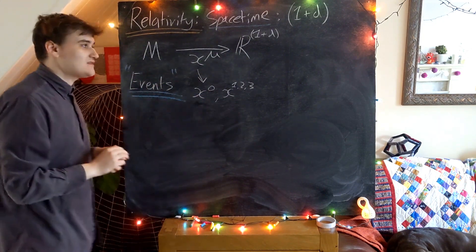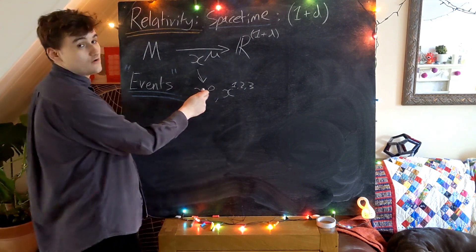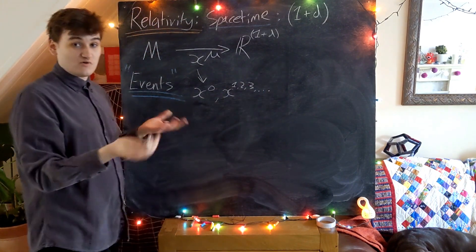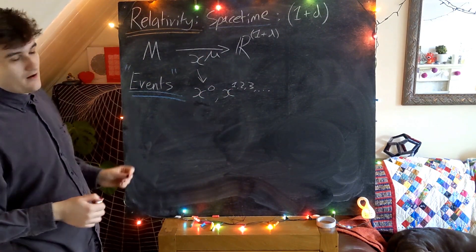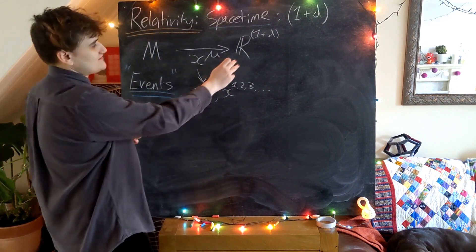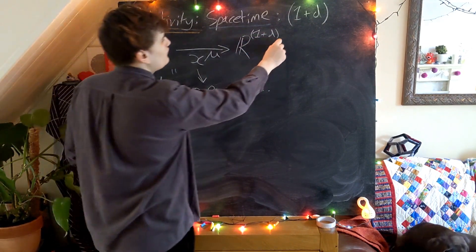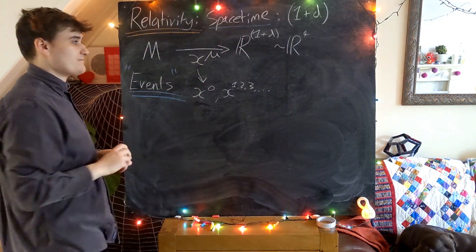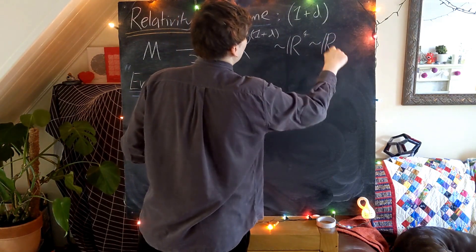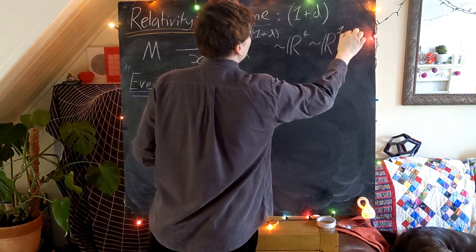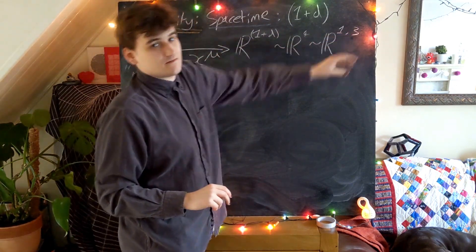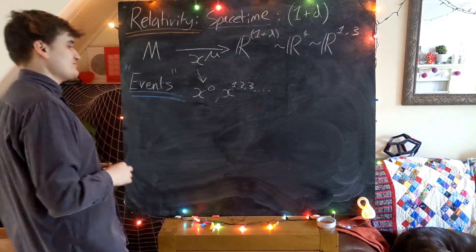By convention, x^0 is always the time coordinate, and then x^1, x^2, x^3 — and potentially more if we have a higher-dimensional space-time — are representing our space coordinates. Another useful notation: in the 1+3 case, instead of writing R^4 we emphasise its space-time nature by saying this R^4 is isomorphic to R^(1,3), where the 1 refers to a time dimension and the 3 is our number of spatial dimensions.